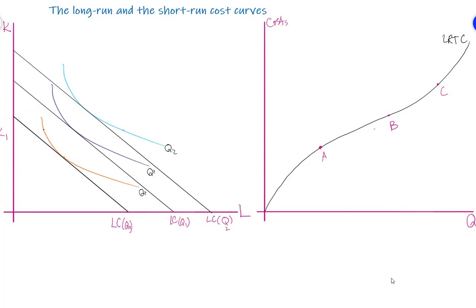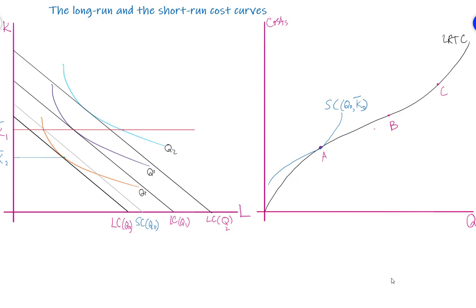Now suppose the firm wants to produce output level Q-naught, but the capital constraint is K1. In this case the firm is not able to achieve the optimal combination, so the firm faces a higher short-run cost, shown in the right panel. The short-run cost curve for output level Q-naught given capital level K-bar-2 is where point A represents the equilibrium — that is, both the long-run and short-run equilibria coincide when the tangency condition is met with capital K-bar-2.